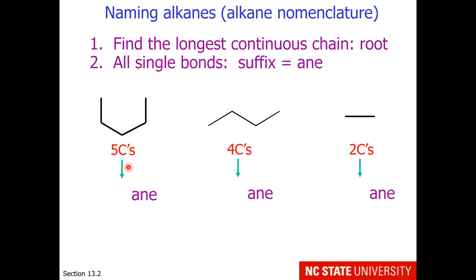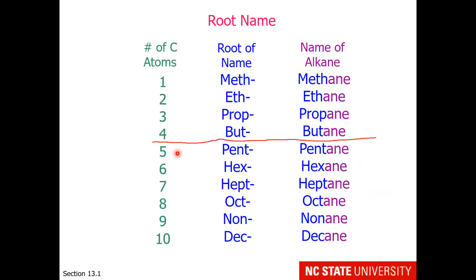Here I have some alkanes: a 5-carbon, a 4-carbon, and a 2-carbon. Let me go over the root for you. Starting at 5 carbons, geometry will help you out. A 5-sided figure is a pentagon, so 'pent' is the root.